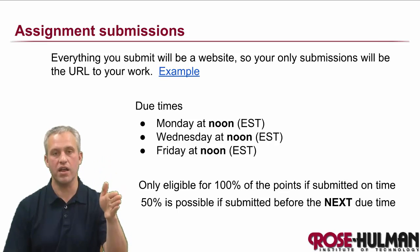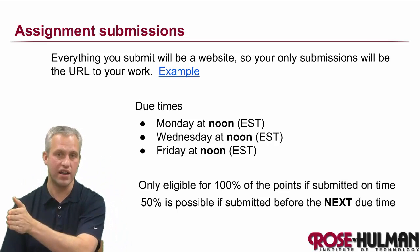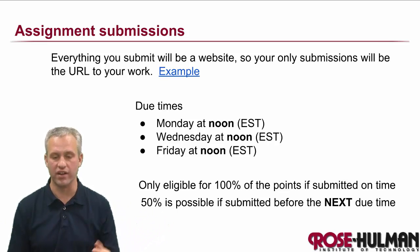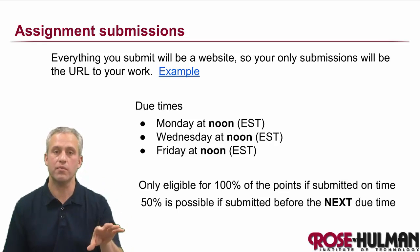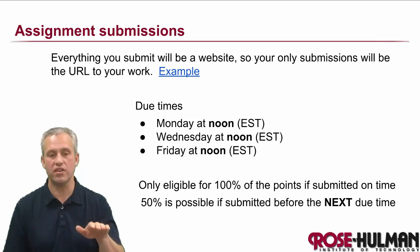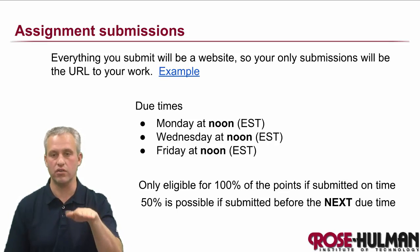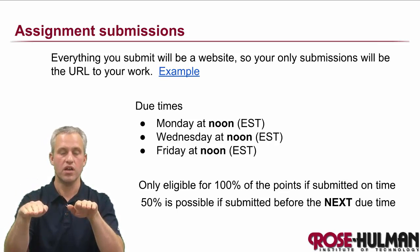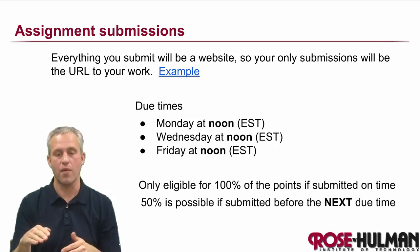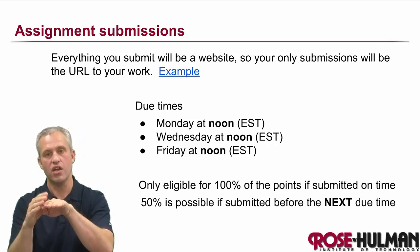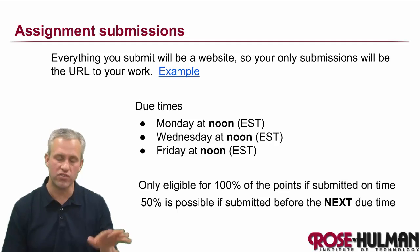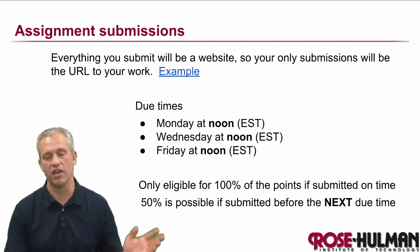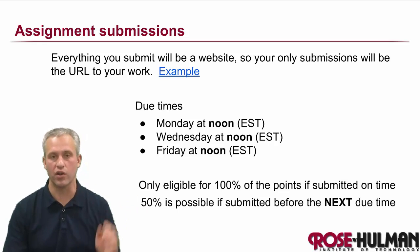The due dates are going to be either Monday noon, Wednesday noon, or Friday noon — there is never any other due time. If you submit something on time, it's eligible for 100%. If you miss a deadline — say it was due Wednesday noon — if you submit it before the Friday noon deadline, you can still get 50% of the credit. The same goes for Friday: miss the Friday noon deadline, submit by Monday noon and get 50%. It's a somewhat harsh system, so submit things on time, but there is a little wiggle. If you miss the next deliverable after that, it won't be worth any points — I'm not going to go back and grade them.